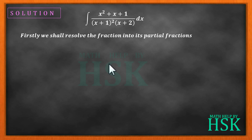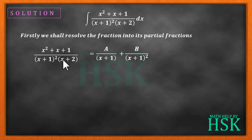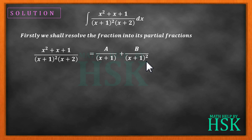We shall resolve this fraction into its partial fraction. It can be written as A/(x + 1) + B/(x + 1)² — because the factors are repeating and the maximum power is 2, giving two terms for (x + 1) — plus C/(x + 2).